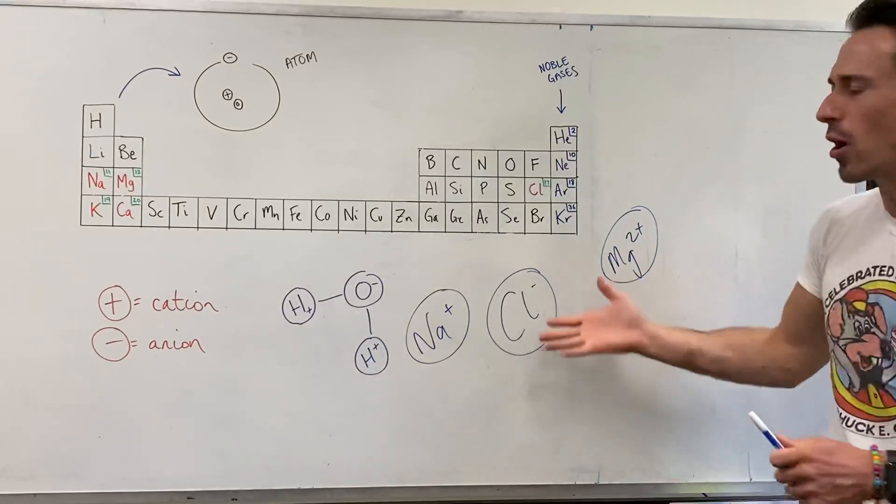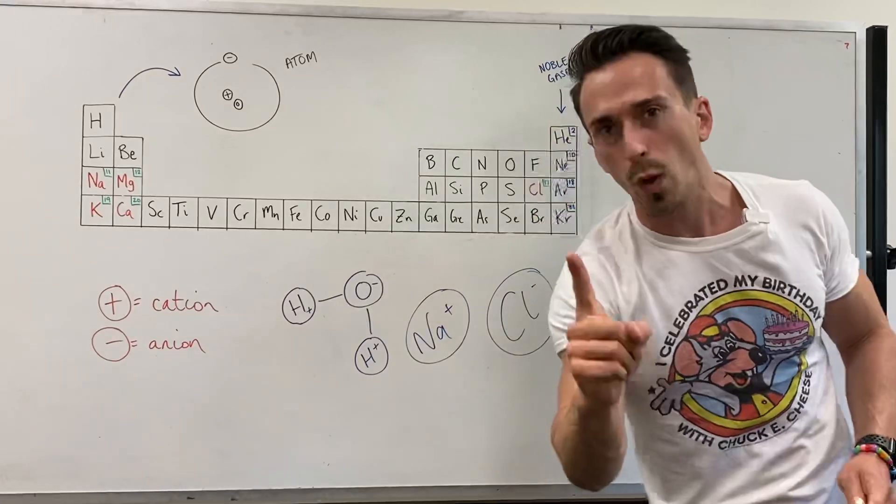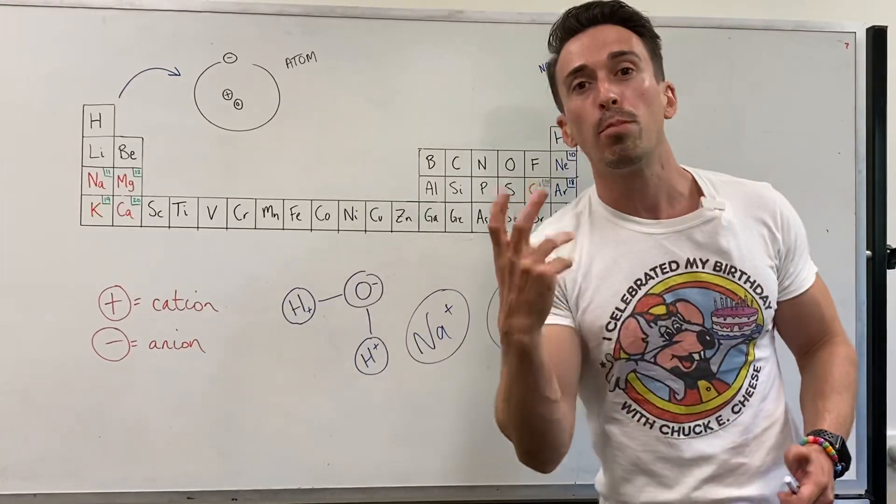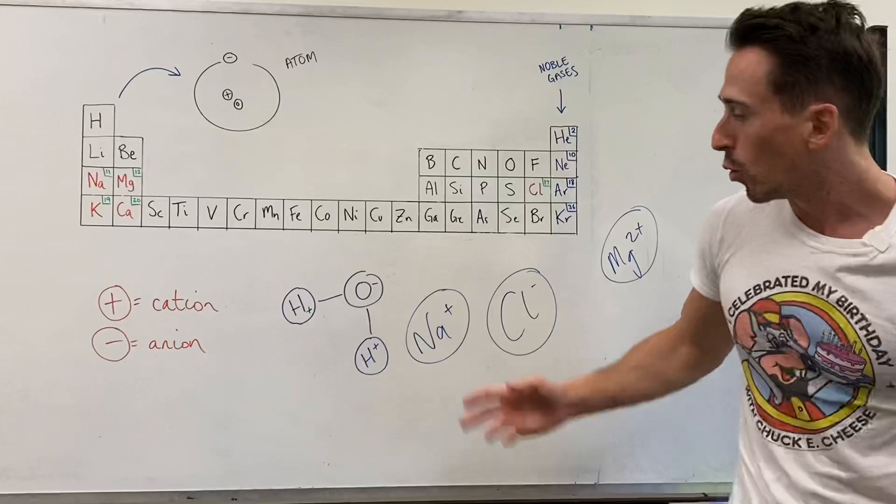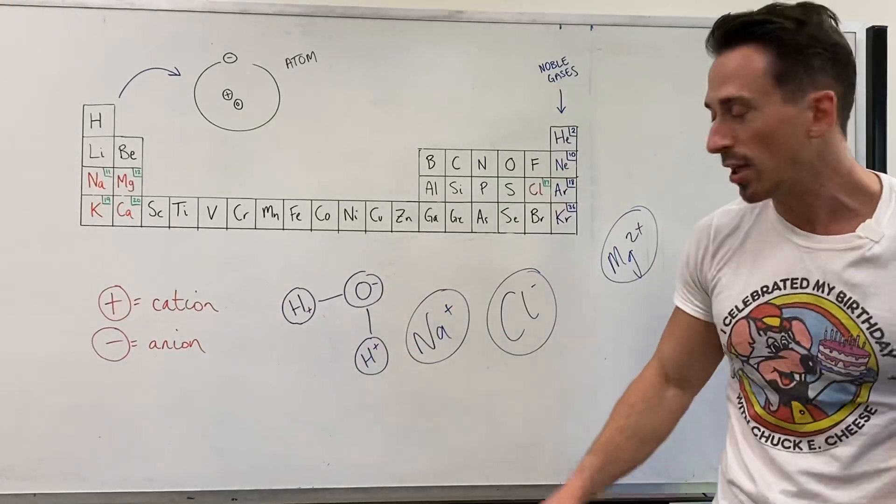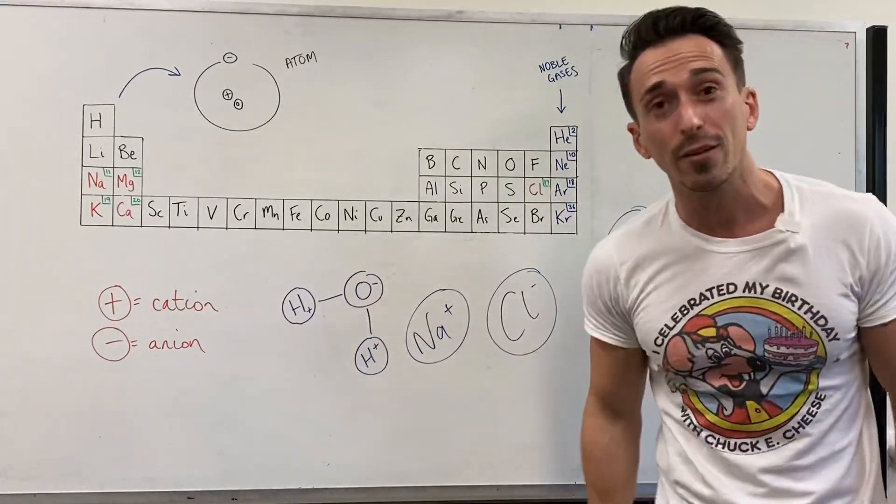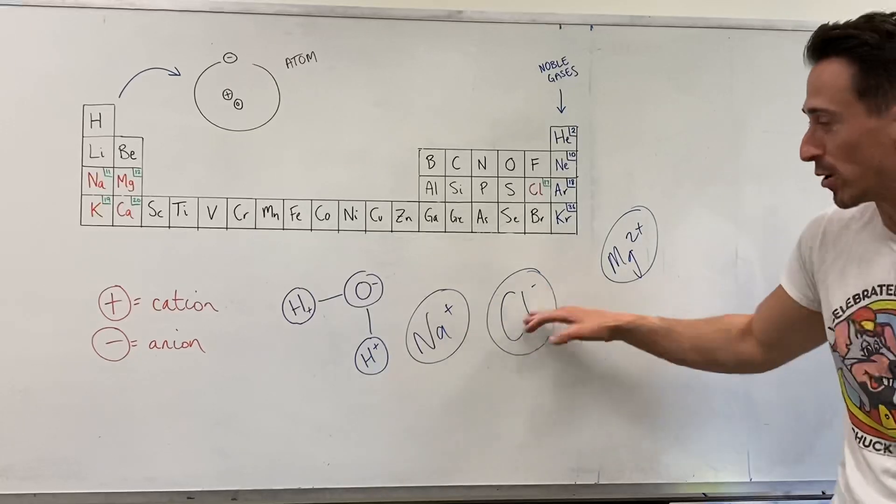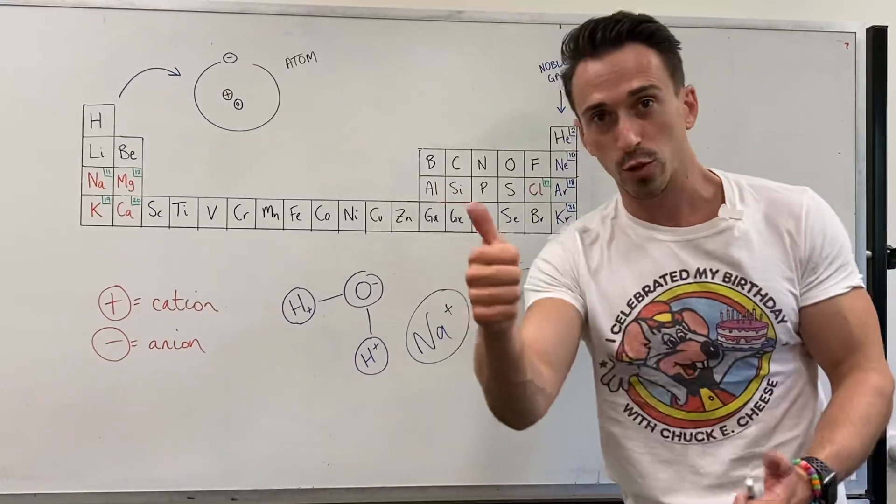Now why do we need these ions in the body? Two major reasons. One, because they have a charge associated with them, they can pull water around the body. Water, being two hydrogen and one oxygen, has a slight positive charge and slight negative charge, and therefore is influenced by positive and negative charges. So water balance, that's one.